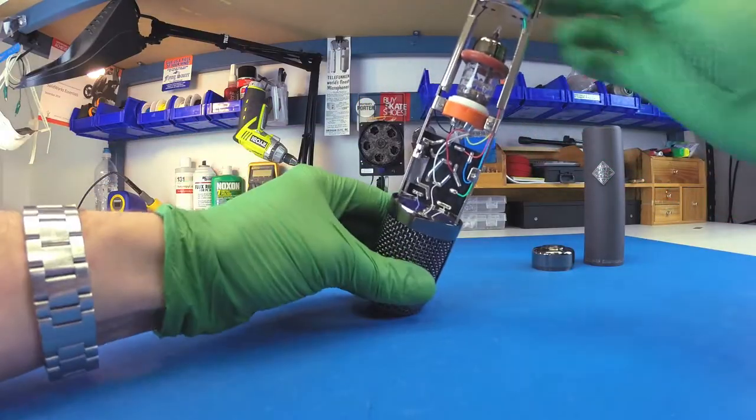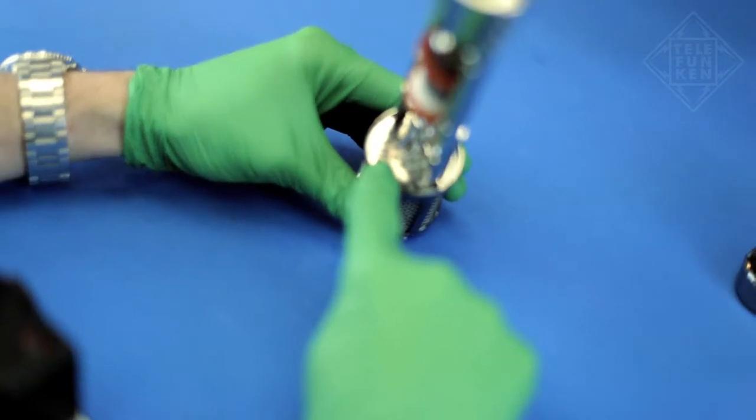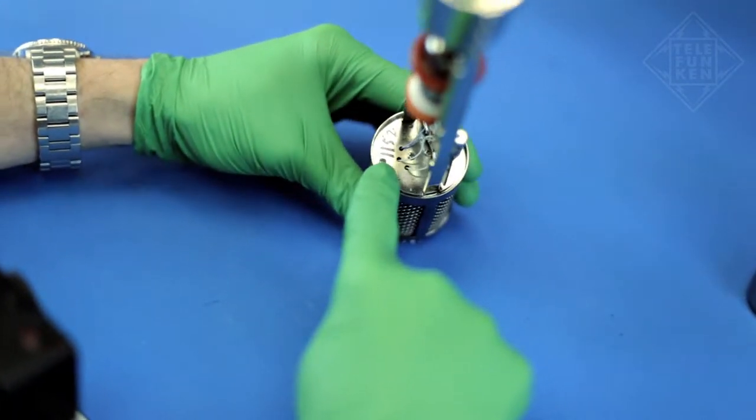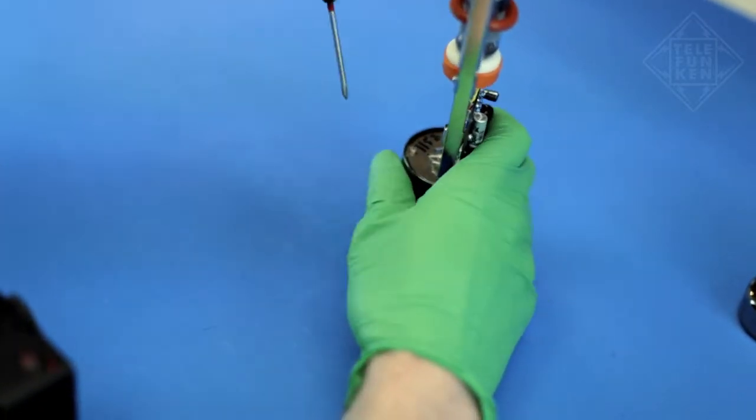Turn the microphone upside down and locate the two screws on the front and back of the top plate. While holding the side rails and the head grill, use a Phillips head screwdriver to remove the screws.